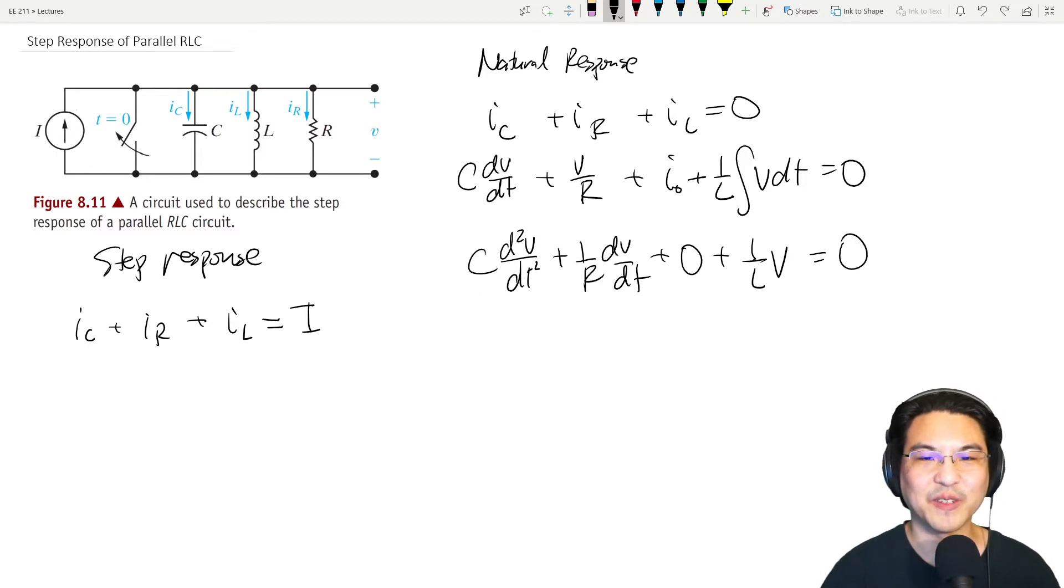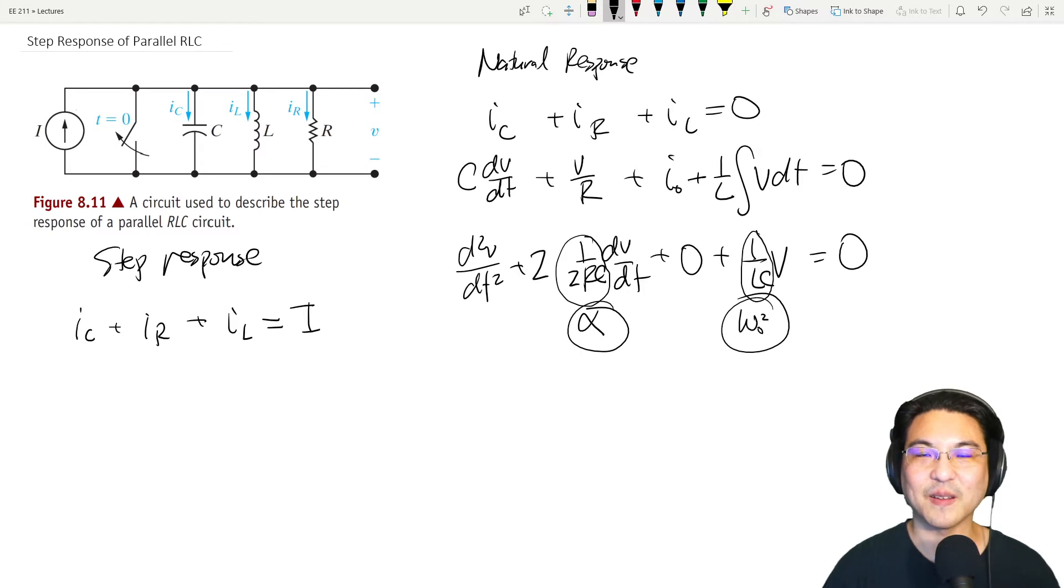And then let's get rid of this coefficient here. So divide everything by C. And then you see this one over RC. Let me factor a two out of there, like this. One over two RC, I'll call that alpha. One over LC, I'll replace that with omega_0 squared. This is the damper frequency, omega_0 is the undamped natural frequency, which leaves us with V double dot plus two alpha V dot plus omega_0 squared V equals zero.